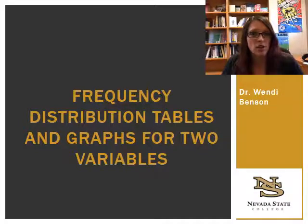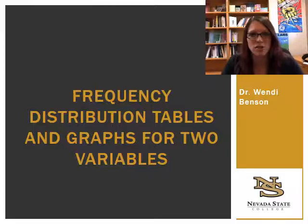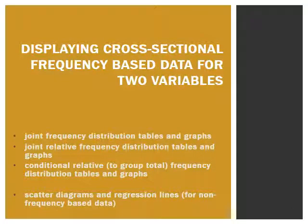Many of you have probably seen scatter diagrams when looking at results from a correlation analysis. We won't do correlation in this class — we'll just look at scatter diagrams and try to interpret relationships between variables. In this lecture you'll see three different types of joint frequency distribution tables: one based on frequencies, one on percentages, and one on conditional percentages. We'll end with scatter diagrams looking at the relationship between raw scores on two numeric variables, and regression lines if the relationship is strong enough.